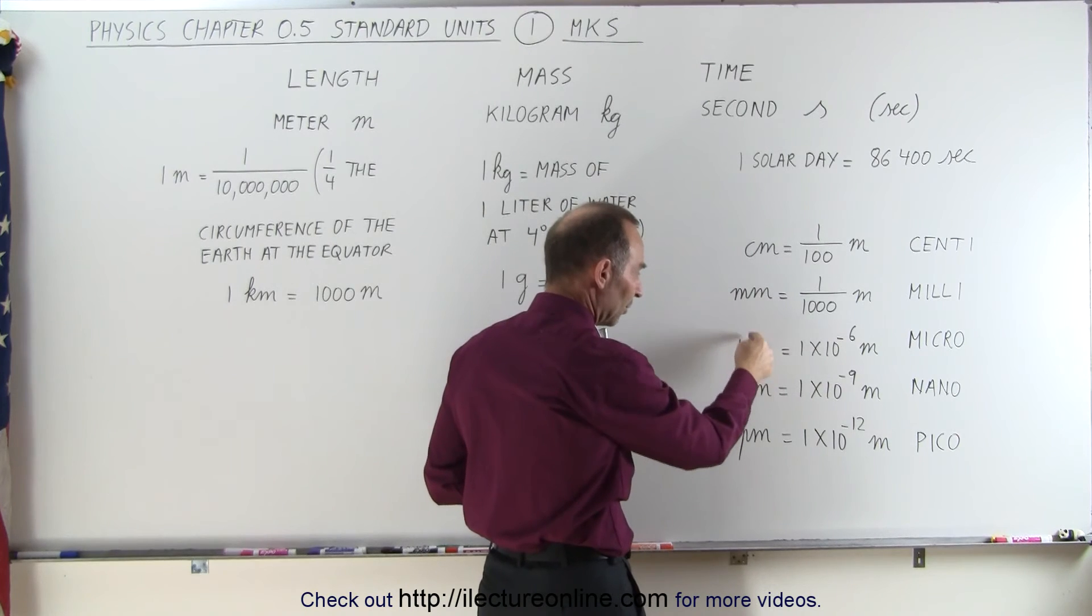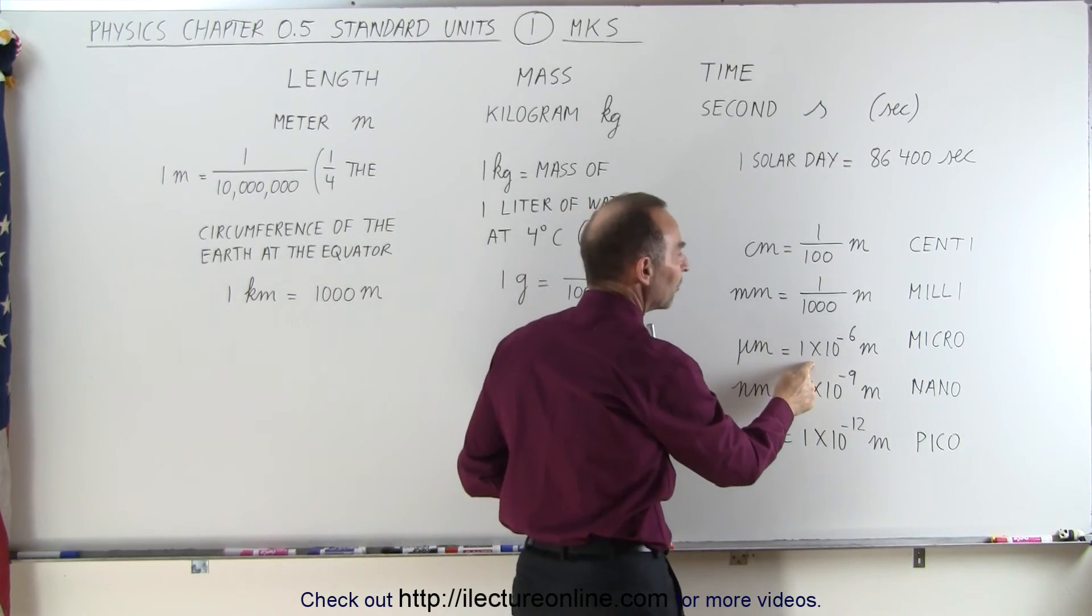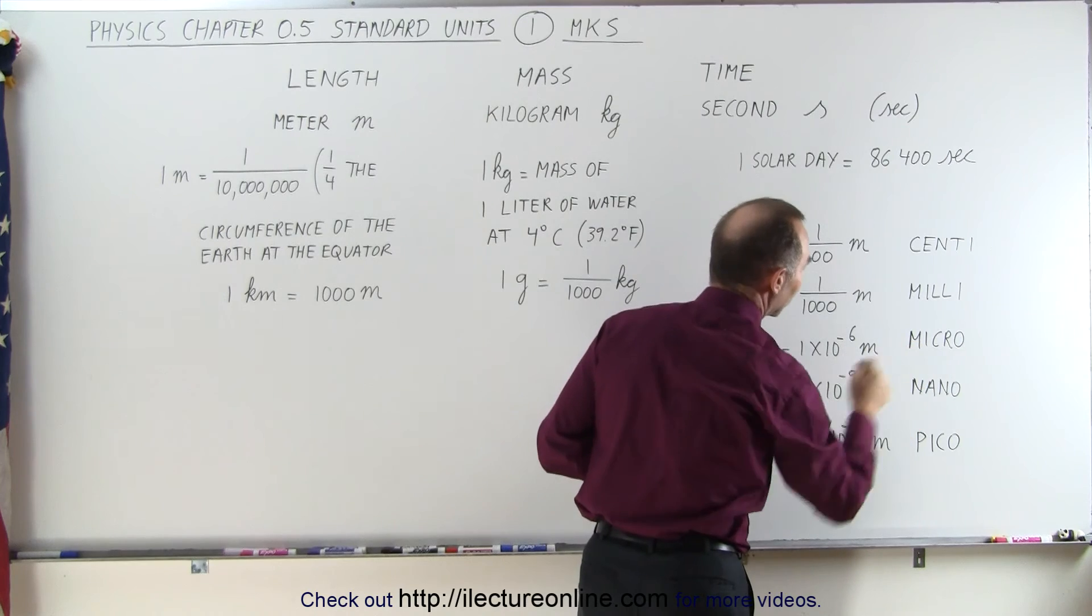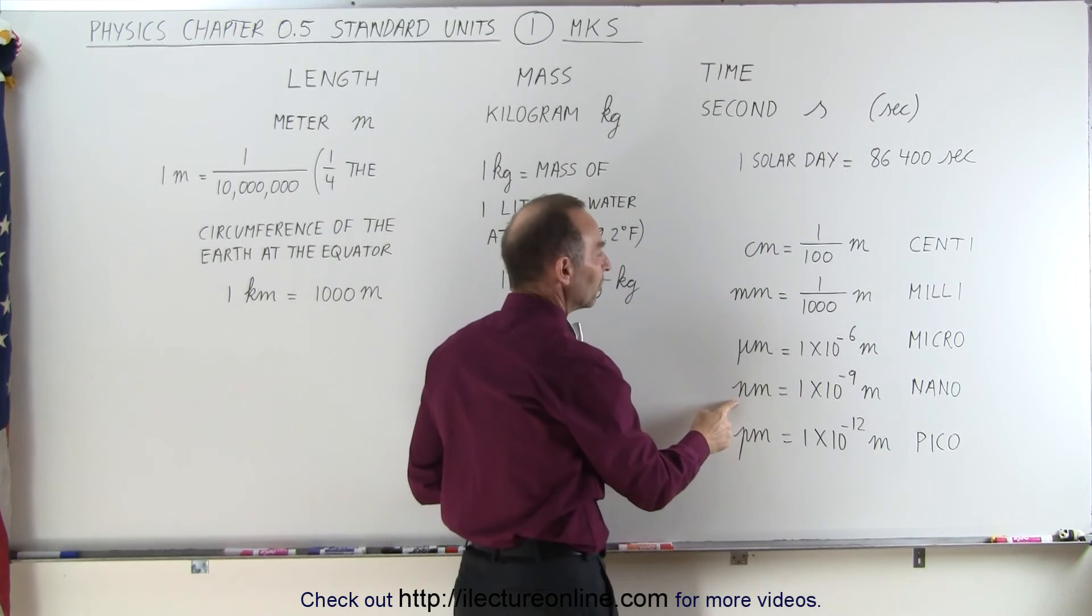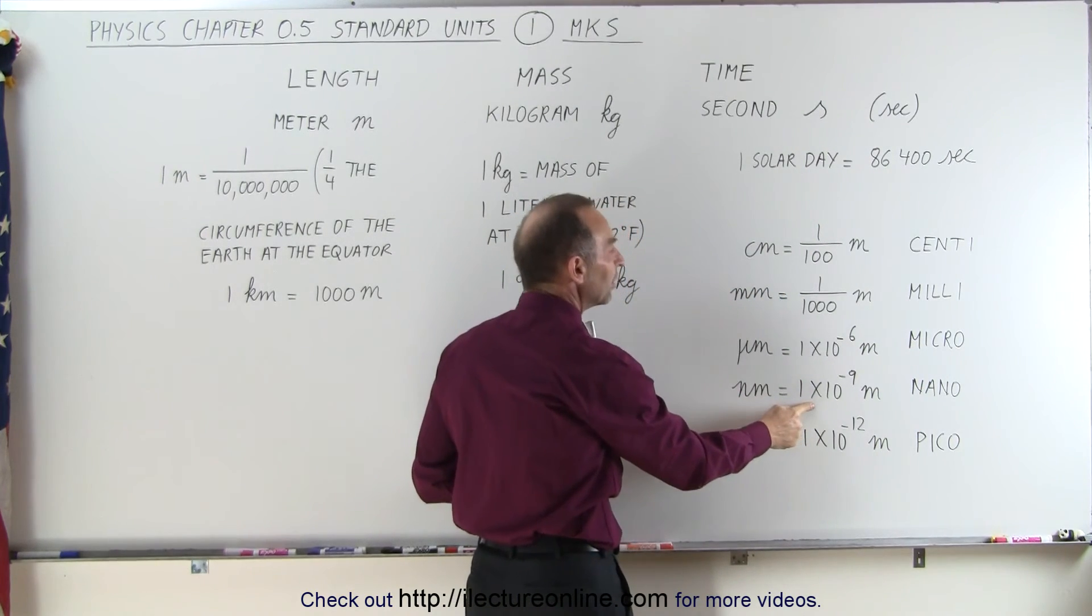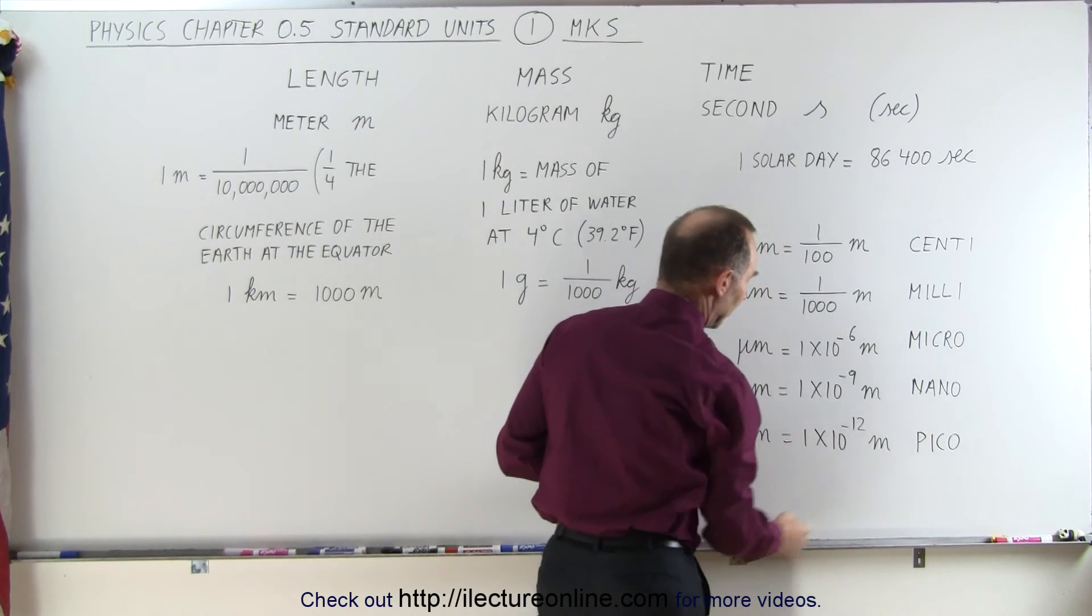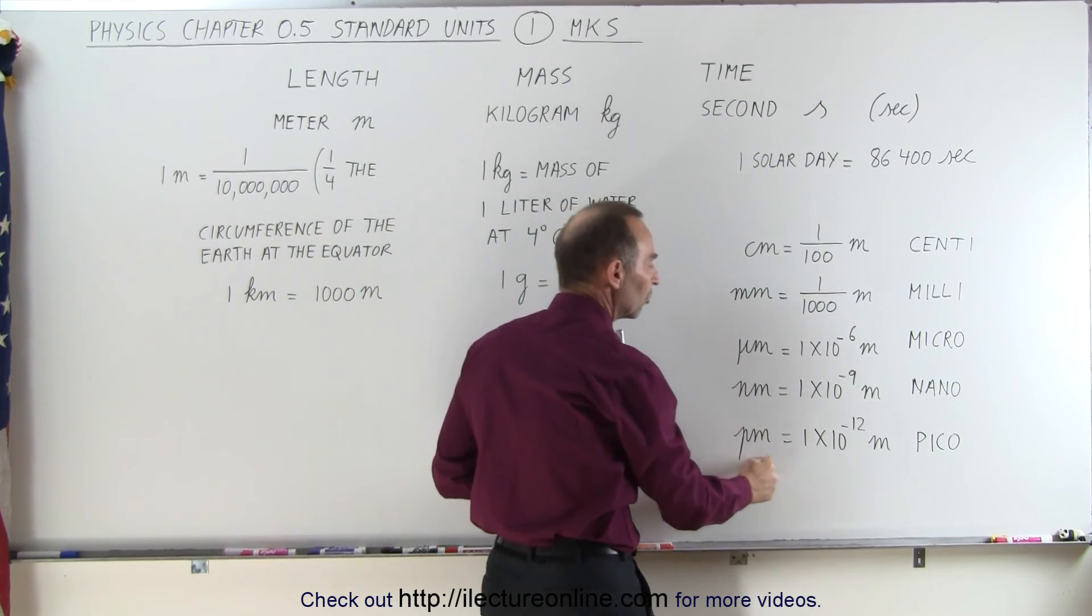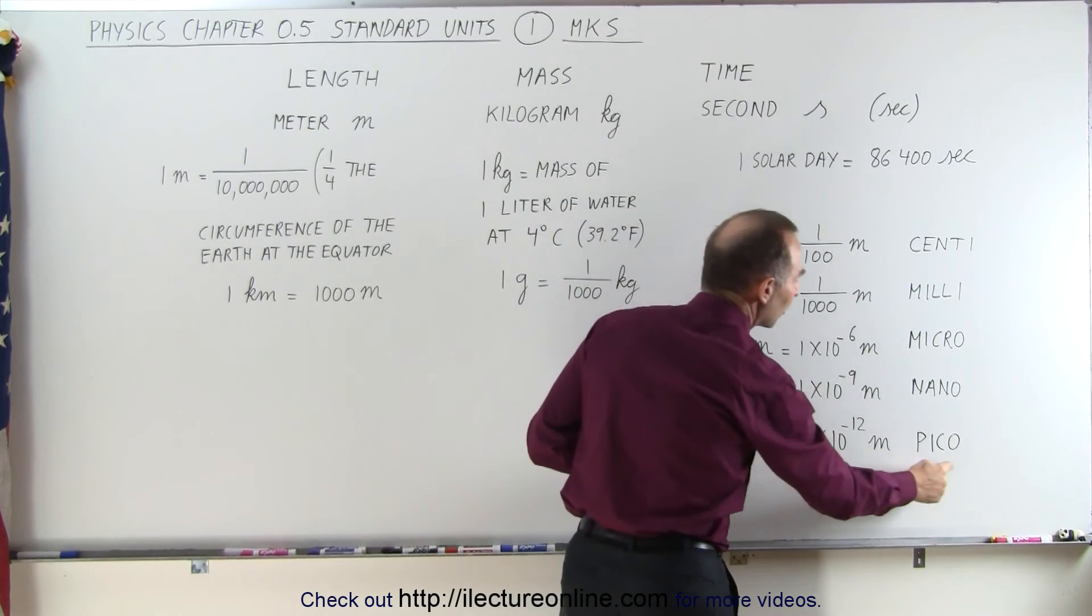Micrometer, this is the symbol for micro. Micrometer is a millionth of a meter, so we use the prefix micro. Nanometers is one billionth of a meter, we use the prefix nano. And picometer is a trillionth of a meter, we use the prefix pico.